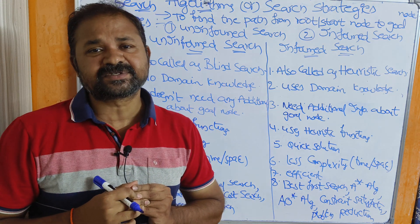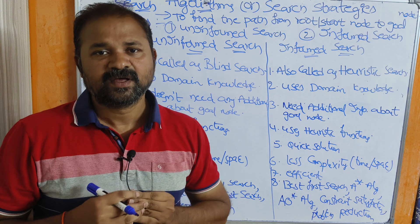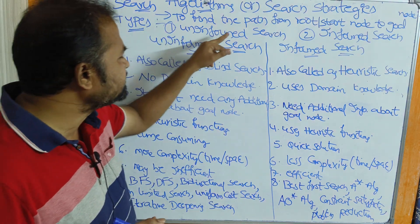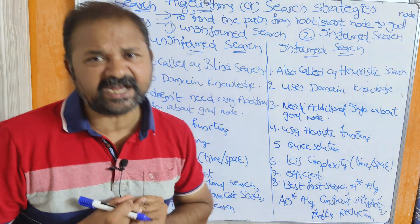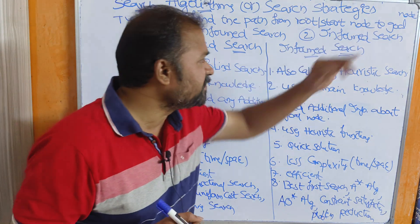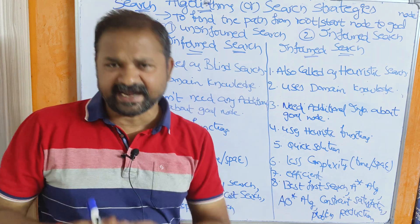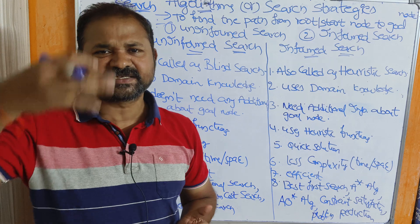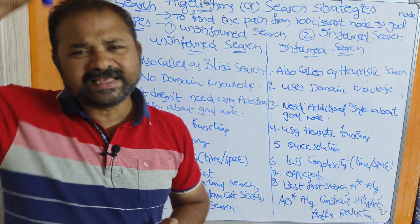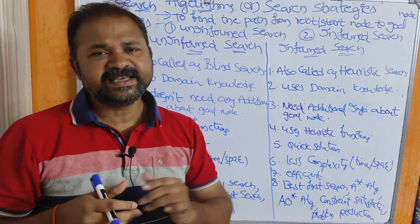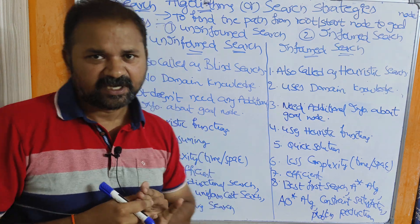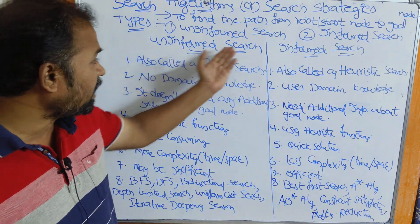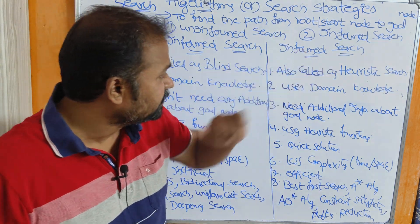Search algorithms or search strategies are mainly classified into two types. The first one is uninformed search algorithms, and the second one is informed search algorithms. Algorithms such as BFS, DFS, best-first search, and A* all come under these two categories. In this video we are going to discuss the important points on uninformed search and informed search.